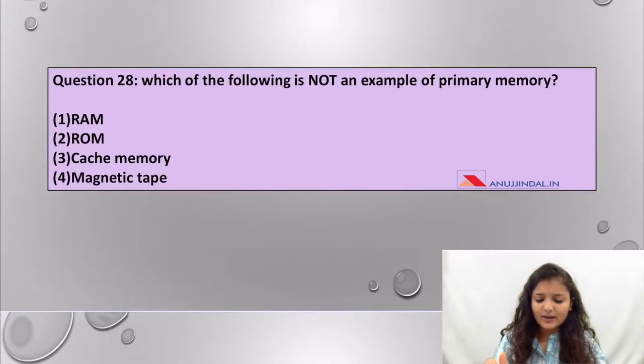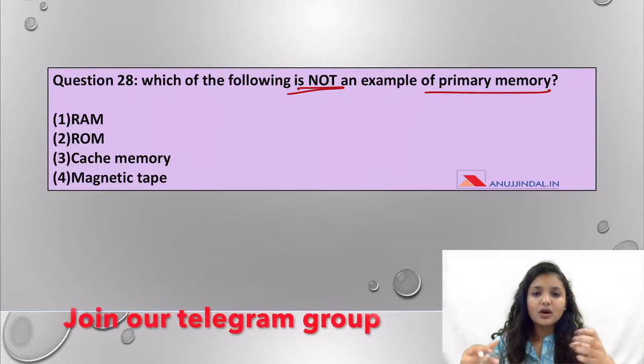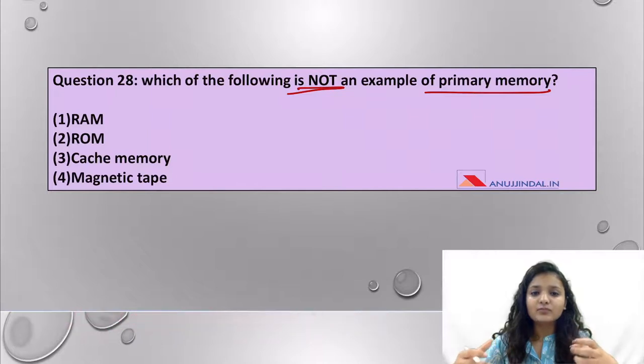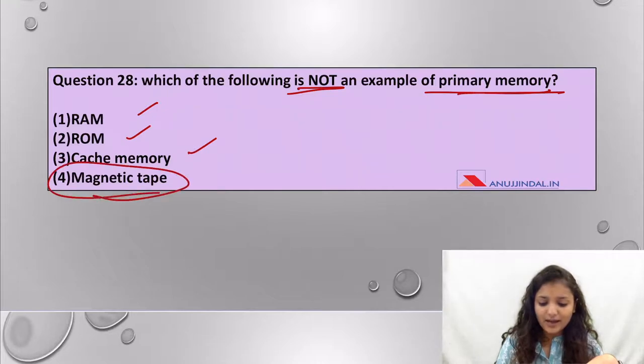Next question is 28: which of the following is not an example of primary memory? Primary memory is accessed directly by the CPU, it stores and processes data. Examples are RAM, ROM, cache memory, but magnetic tape is a kind of external memory. So the answer is option number four.